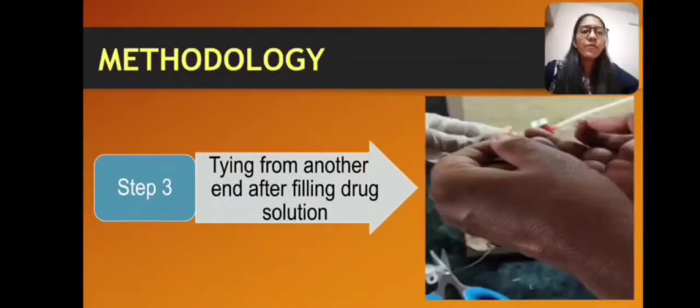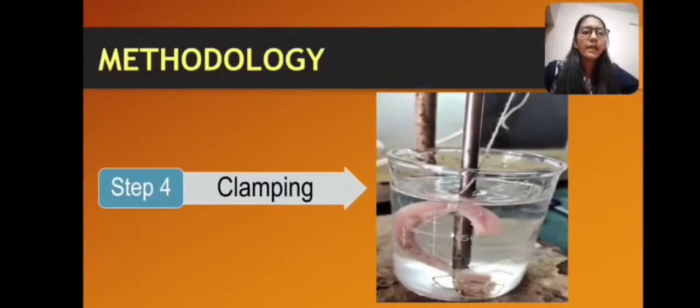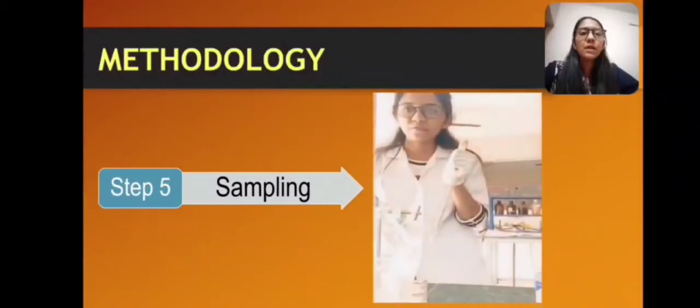Step four is clamping. After tying both ends tightly, the filled intestinal sac is immersed in a beaker containing oxygenated medium at 37 degrees Celsius. During this whole process, oxygen is provided using the aeration tube. After clamping, the last step is sampling.